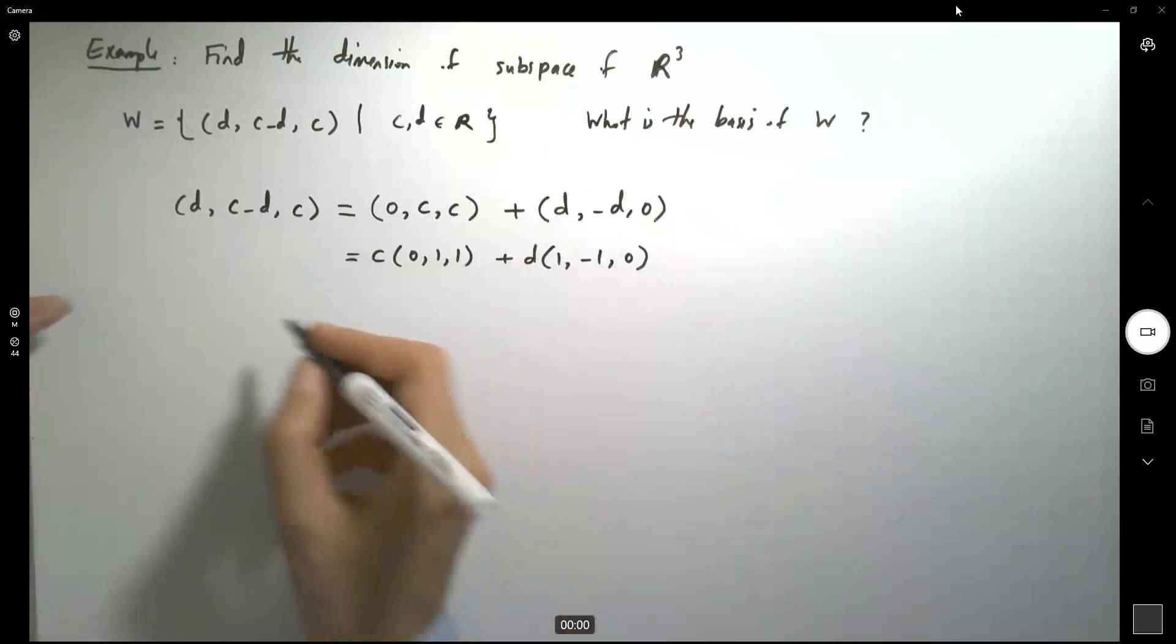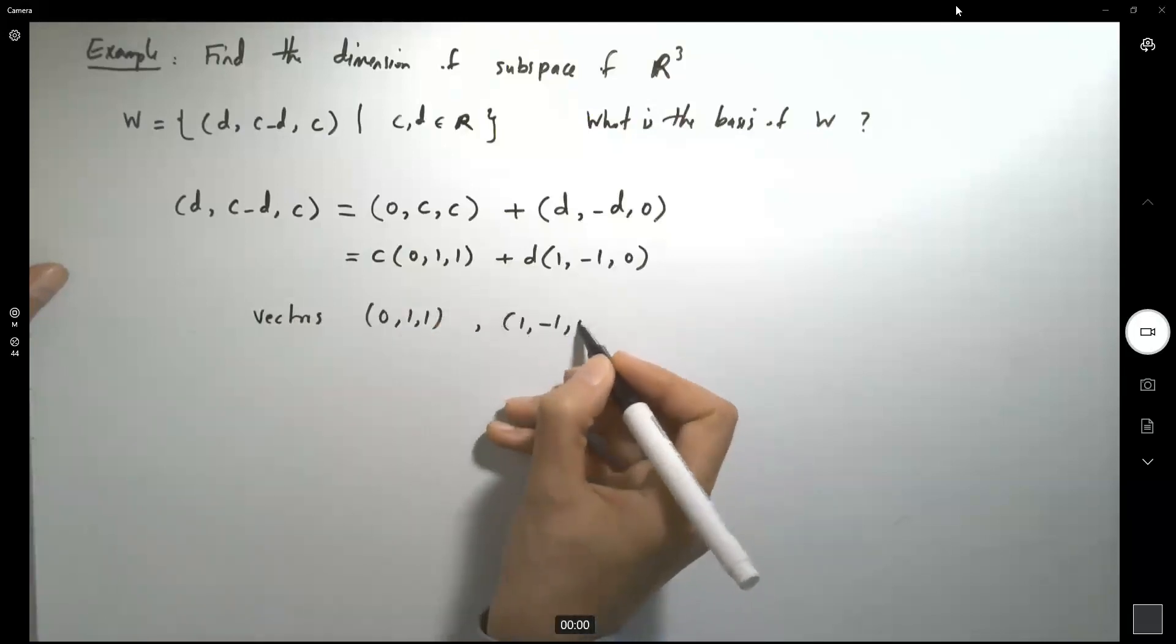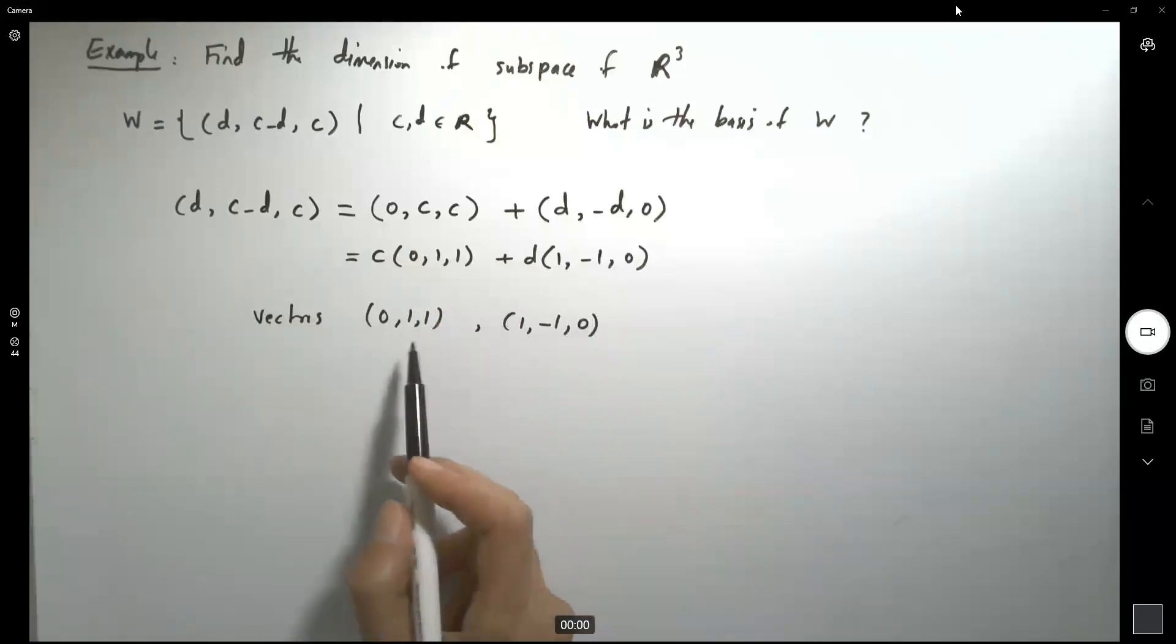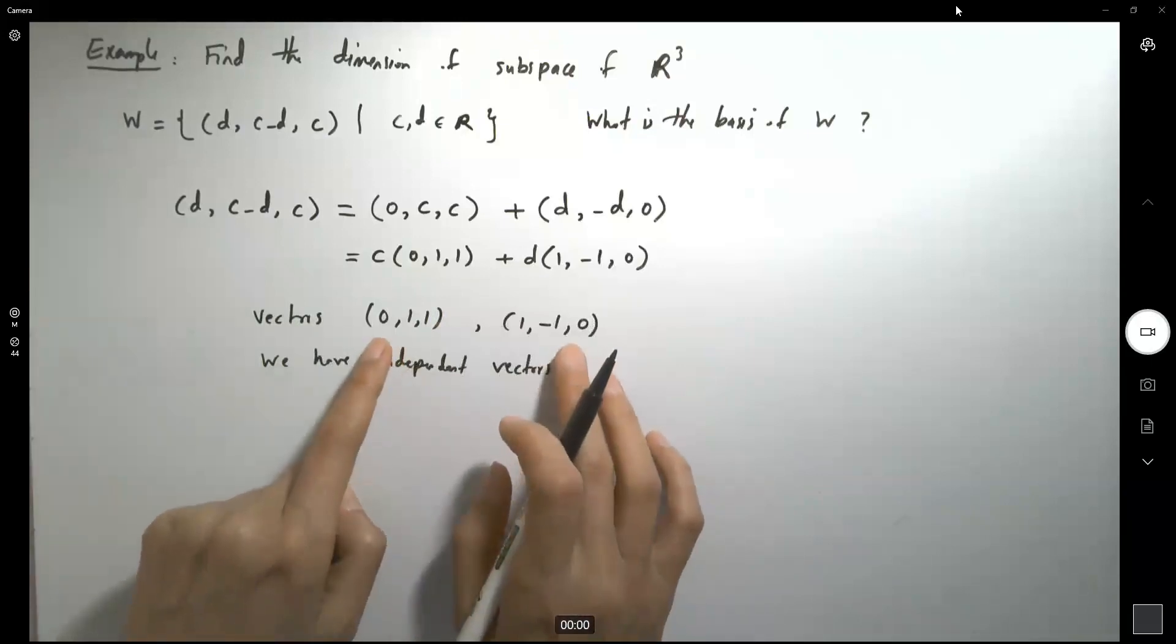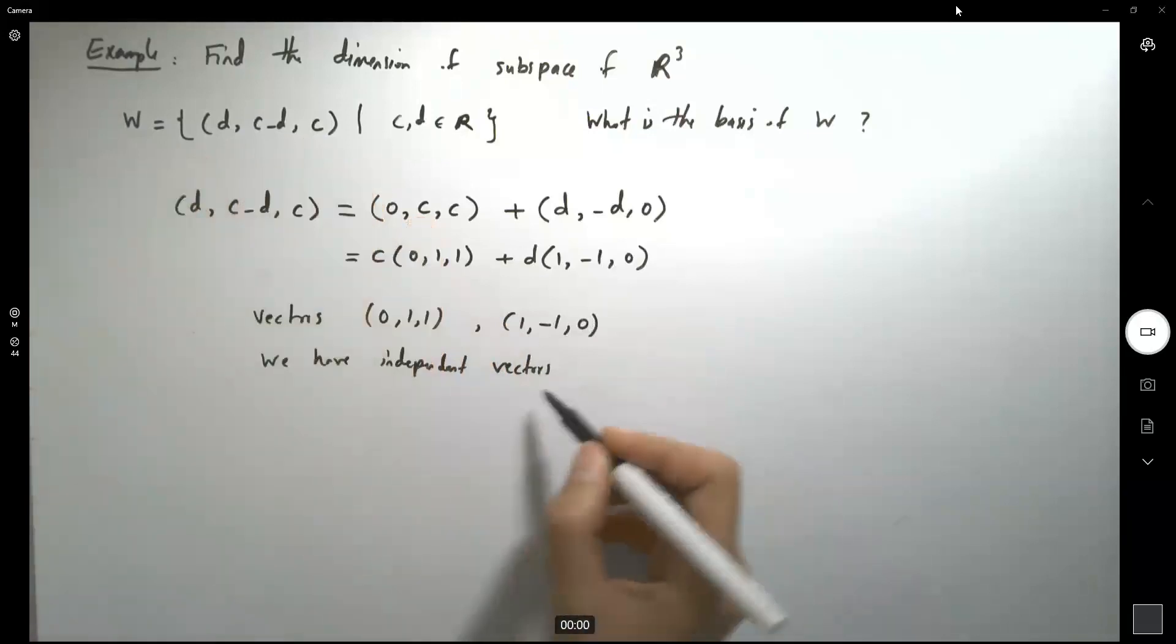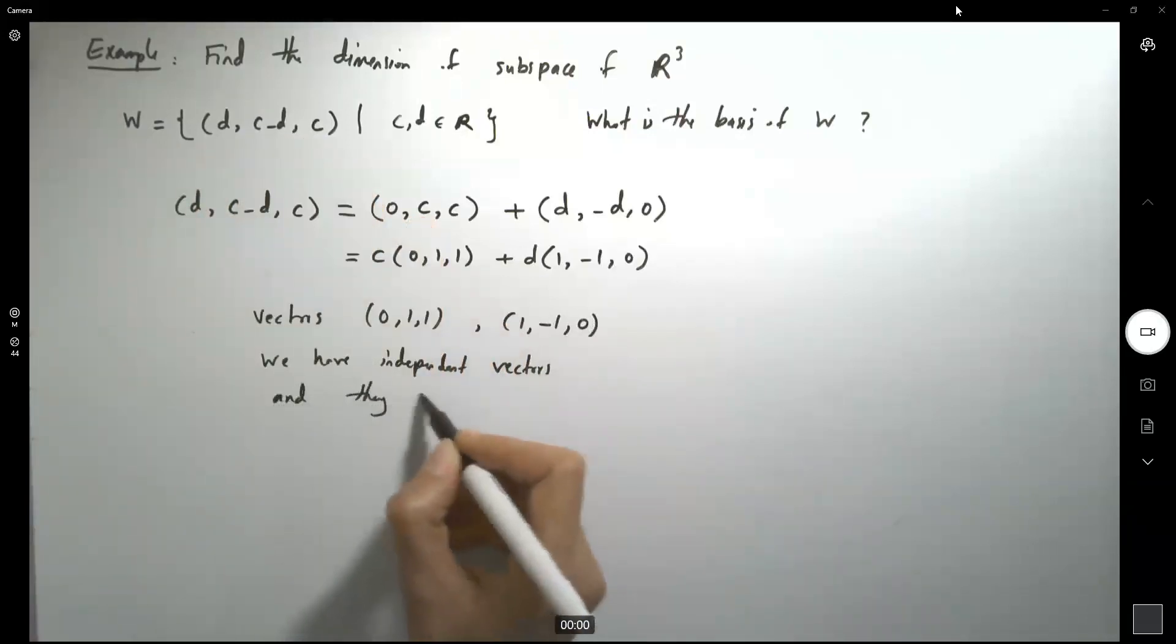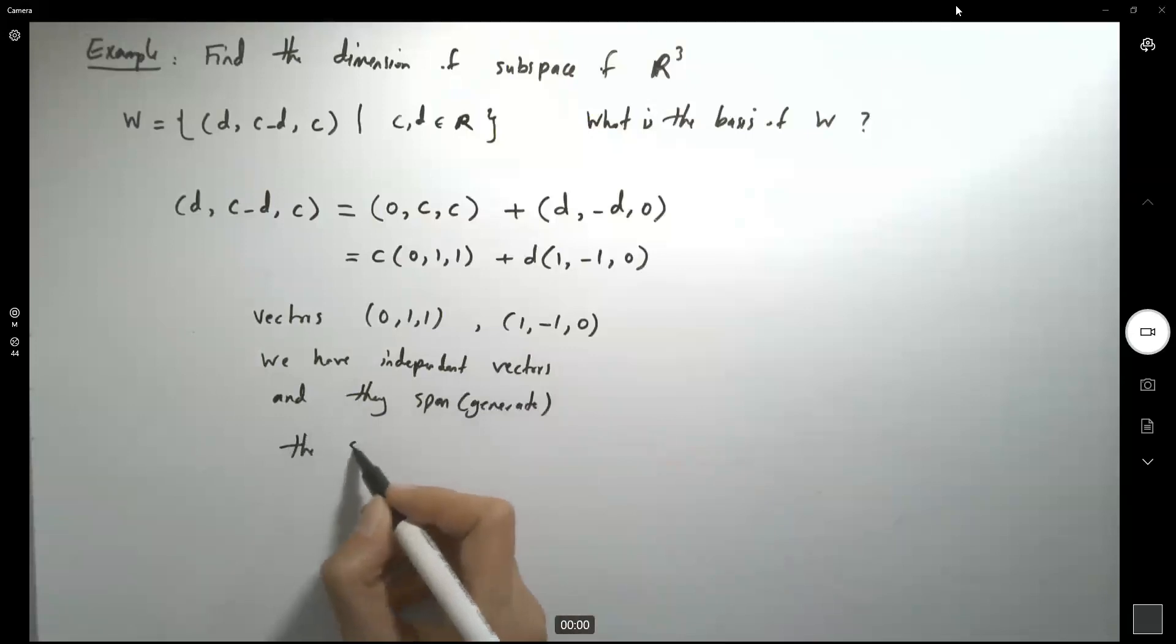Now take a look at these two vectors, vectors 0, 1 and 1, and 1, negative 1 and 0. So these two vectors are independent vectors. And both of these vectors generate this subspace. And they span or generate this subspace W.